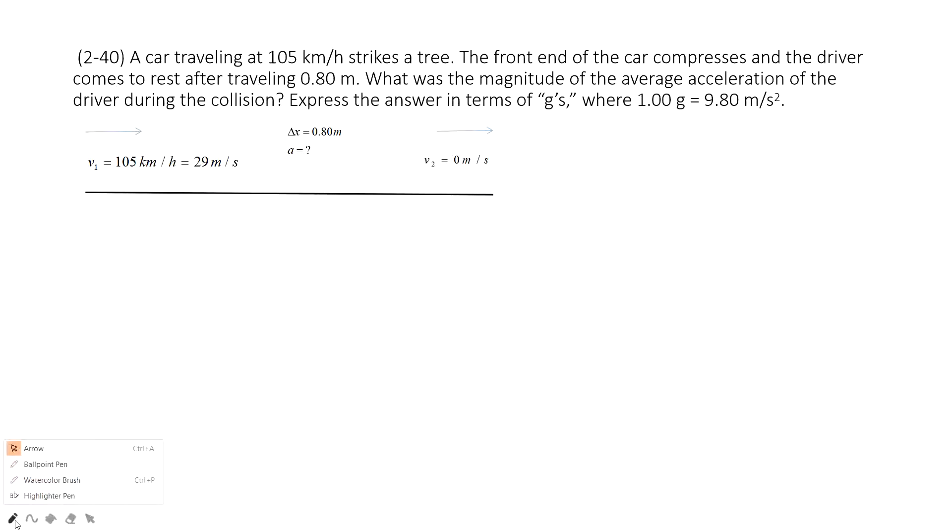At first, let's find the keyword. It tells us a car traveling at 105 km per hour. This one tells us the initial velocity. We must convert unit km per hour to meter per second. Agree?